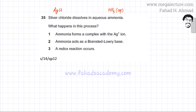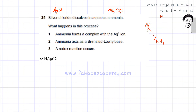When silver chloride dissolves, it dissociates into its ions — AgCl forms the Ag+ ion. The ammonia molecules in the solvent have lone pairs, so the silver ions begin attracting these NH3 molecules and dative bond formation occurs.